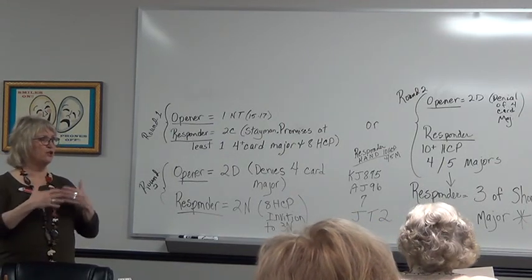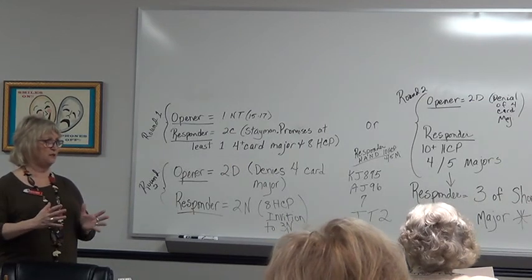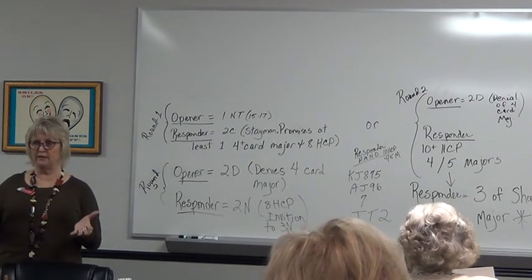Starts with one no trump from the opener, 15 to 17 being the range. The responder starts with two clubs. That's Stayman. Two clubs promises two things: it promises at least one four card major and at least eight high card points. Not total points, high card points. That's what Stayman is. The goal is to figure out, do we have a 4-4 fit?